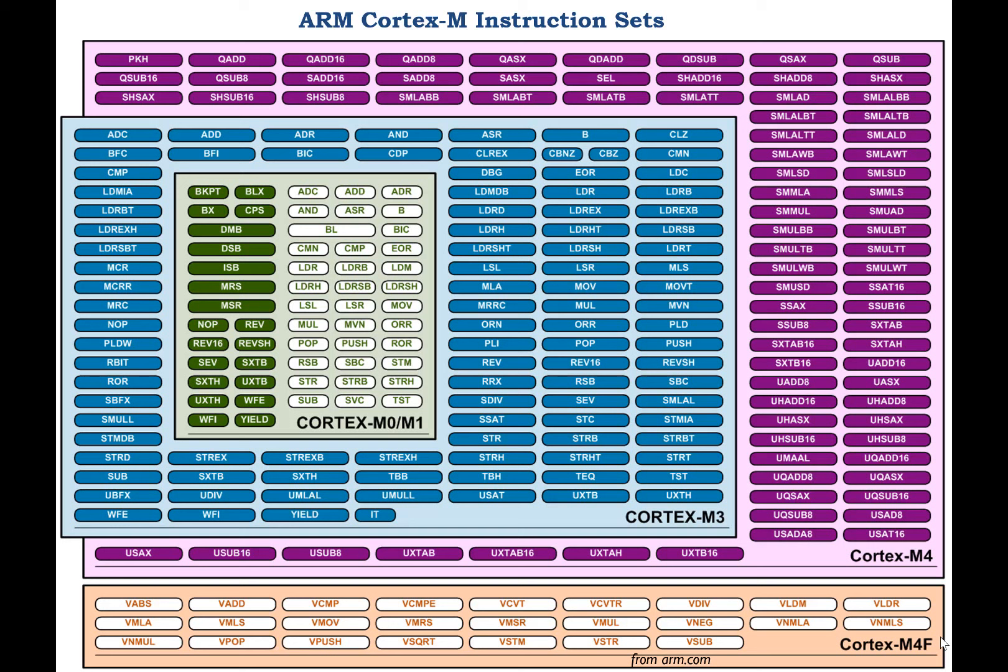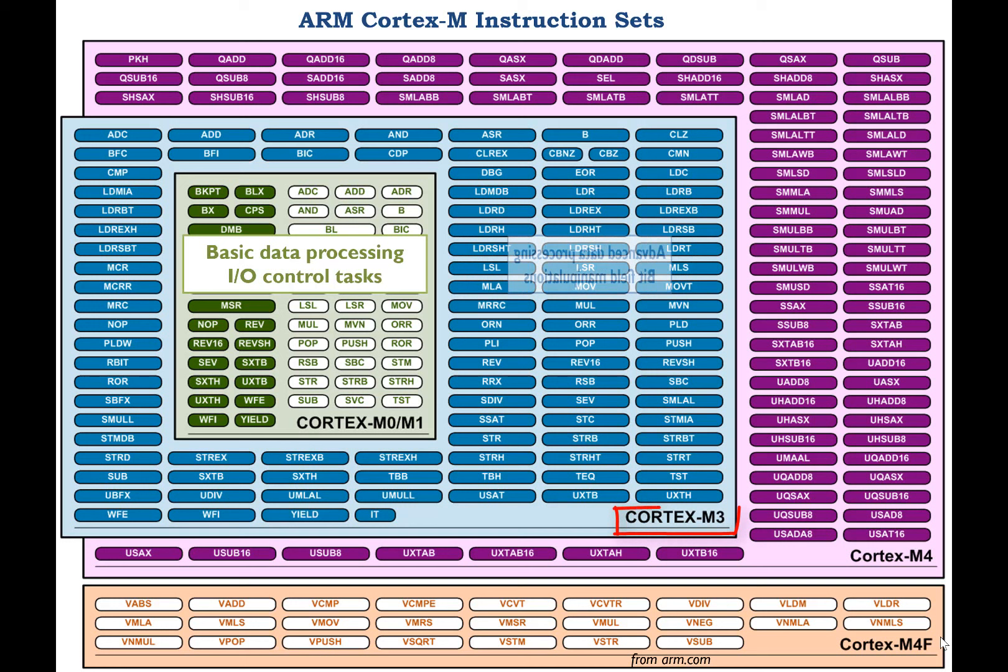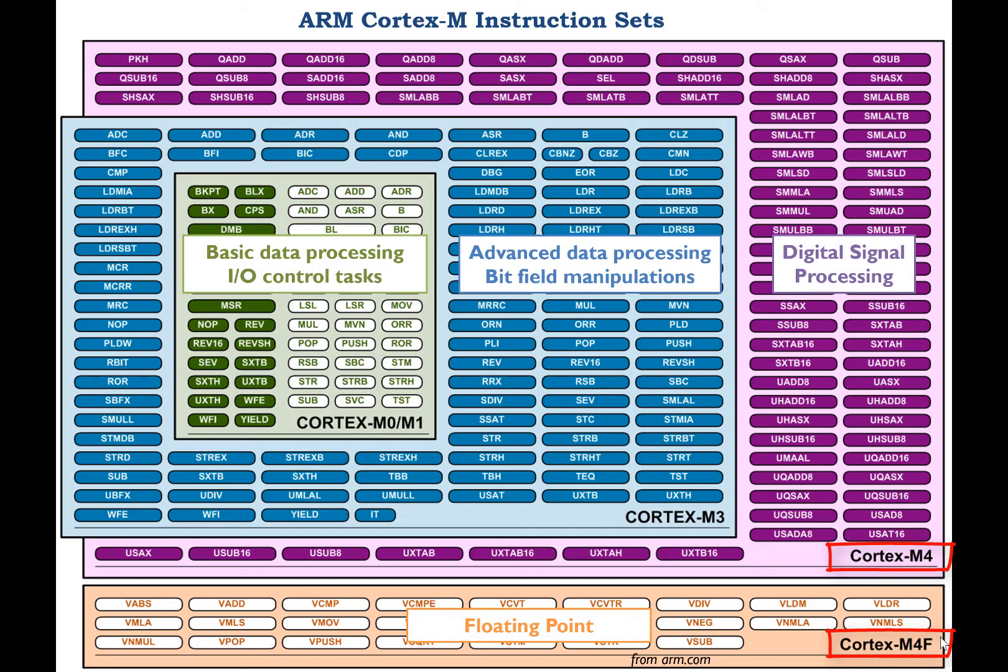Cortex-M0 and M1 provide basic instructions for data processing and I/O control. Cortex-M3 extends M0 and M1 by adding instructions for advanced data processing and bit field manipulations. Cortex-M4 extends M3 by adding instructions for digital signal processing and floating point operations.